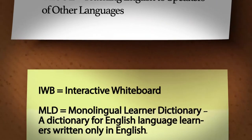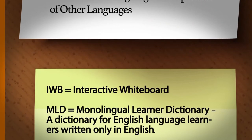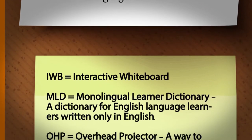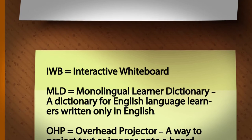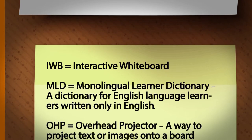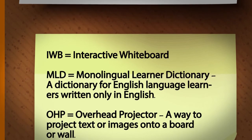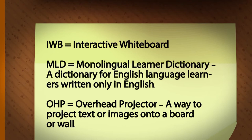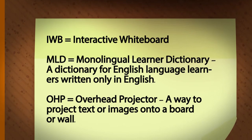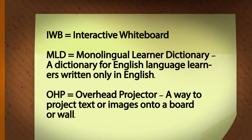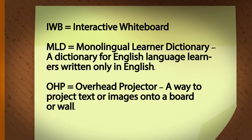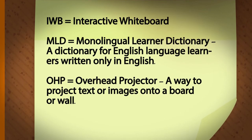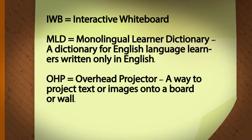IWB: Interactive Whiteboard. MLD: Monolingual Learner Dictionary — a dictionary for English language learners written only in English. OHP: Overhead Projector — a way to project text or images onto a board or wall.